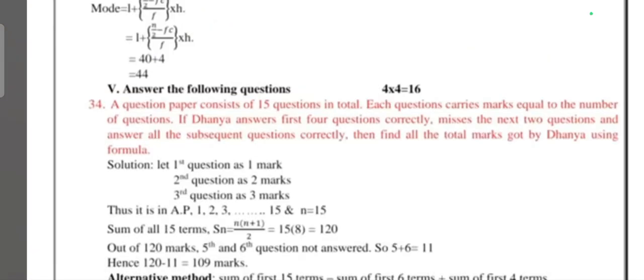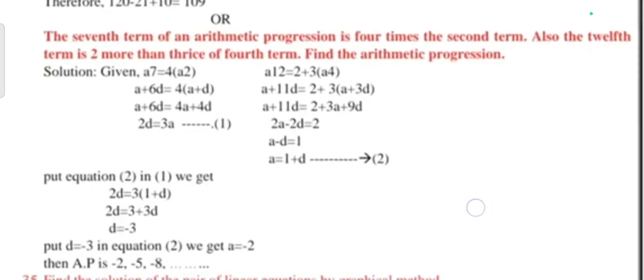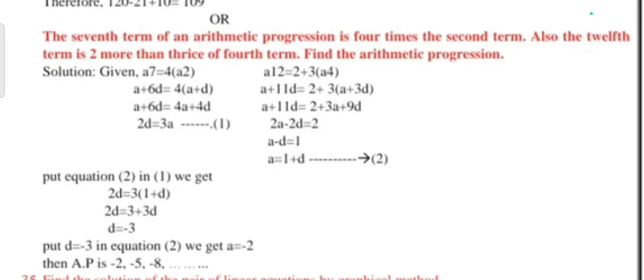Next one, four mark question. The question paper consists of 15 questions in total. Each question carries marks equal to the number of the question. If Dhania answers the first four questions correctly, misses the next two questions, and answers all the subsequent questions correctly, then find the total marks got by Dhania using the formula. Next question: The seventh term of an arithmetic progression is four times the second term, and also the twelfth term is two more than twice the fourth term. Find the arithmetic progression.